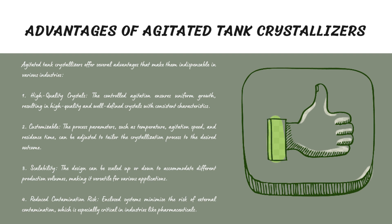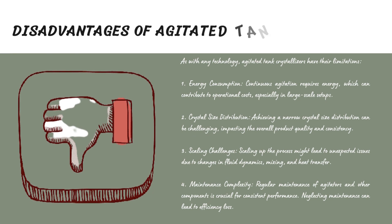The third advantage is scalability — these crystallizers can adapt to various production volumes. In food industries, they are used to scale up chocolate production from small artisanal batches to large-scale manufacturing. The fourth advantage is reduced contamination risk — the enclosed system prevents cross-contamination. In pharmaceuticals, agitated tank crystallizers maintain the purity of drugs, which is crucial for ensuring the safety and efficacy of medications.